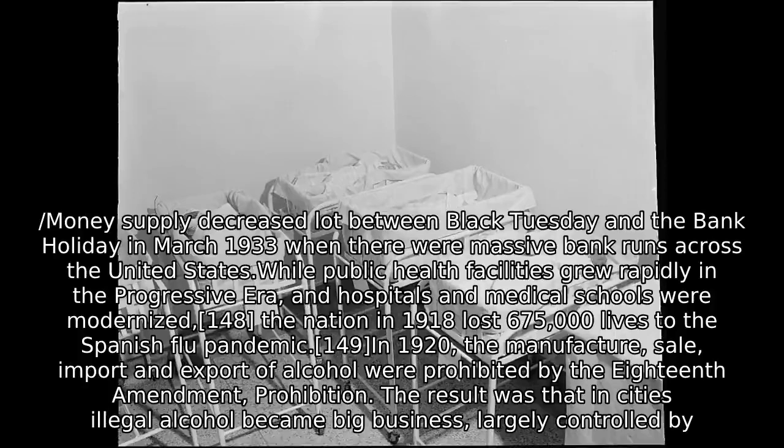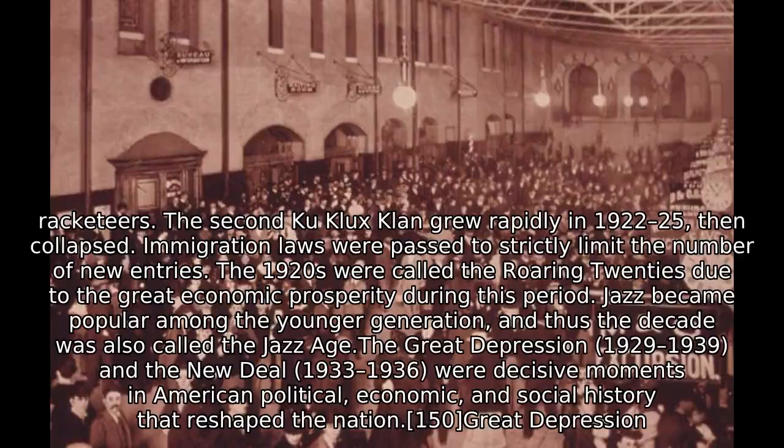The nation in 1918 lost 675,000 lives to the Spanish flu pandemic. In 1920, the manufacture, sale, import, and export of alcohol were prohibited by the Eighteenth Amendment — Prohibition. The result was that in cities illegal alcohol became big business, largely controlled by racketeers. The second Ku Klux Klan grew rapidly in 1922–25, then collapsed. Immigration laws were passed to strictly limit the number of new entries.